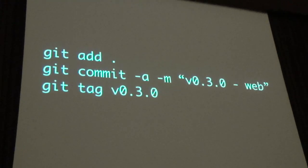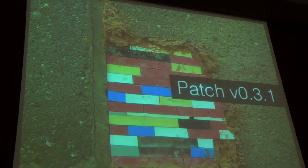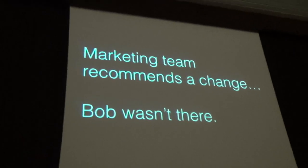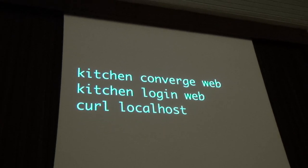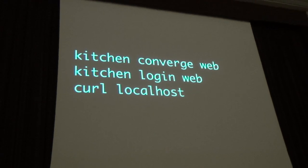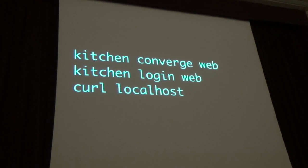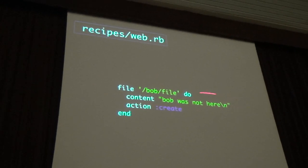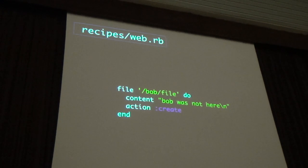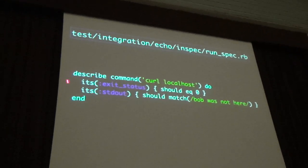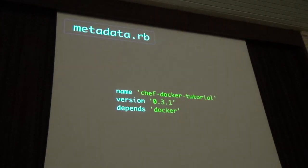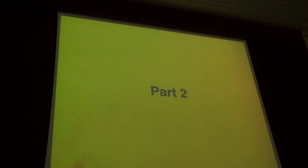For the last patch — the marketing team calls and says there's something wrong. Confirm what they're talking about, reproduce the problem, converge your test suite, log in and look around. You fix it, go back to the recipe, update the file, run Chef again — it automatically rebuilds the containers and redeploys everything. Document that in your integration tests, then Rubocop, RSpec, Test Kitchen, bump it, tag it, push it.